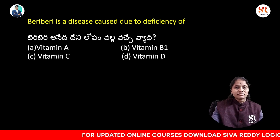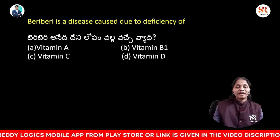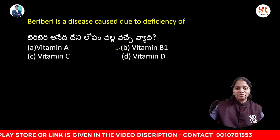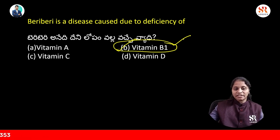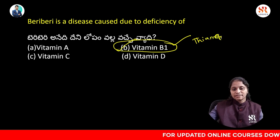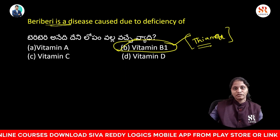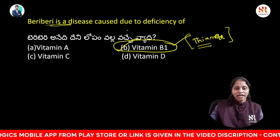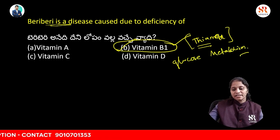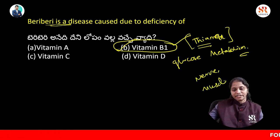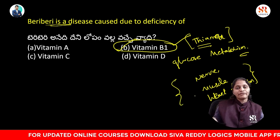Next question: beriberi disease is caused due to the deficiency of vitamin A, vitamin B1, vitamin C, or vitamin B? The answer is vitamin B1. Beriberi is caused due to the deficiency of vitamin B1, also known as thiamin. Vitamin B1 is essential for glucose metabolism and plays a key role in nerve, muscle, and heart function.